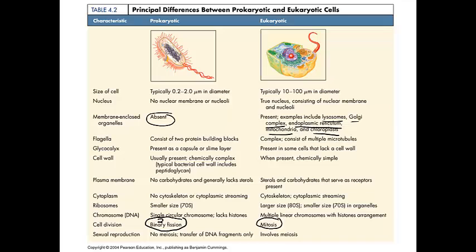So how do you get genetic diversity if both of these processes result in genetically identical cells? Well, they do carry out sexual reproduction. Bacteria carry out sexual reproduction — two bacteria will line up next to each other and build a conjugation tube between them. Through that conjugation tube they transfer their genetic material, which is DNA. In eukaryotic cells, a process called meiosis occurs, which you studied in grade 9. Meiosis results in gametes, which are the sex cells, also called sperm and egg.